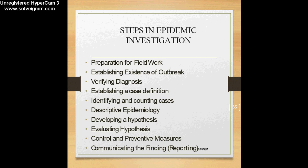Counting cases allows you to perform a descriptive epidemiology whereby you draw epidemic curves and find the prevalence of the condition. Next is to develop a hypothesis — a statement you would like to prove to check what is the source of the epidemic — and by doing epidemiological studies you can evaluate your hypothesis. Based on the source identified, control and preventive measures can be initiated. The final step is communicating the findings to all concerned — the public, policy makers, and the media.